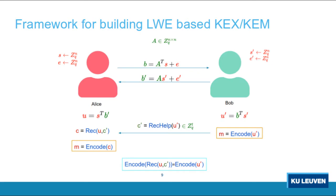Now let's look at the design of our schemes. We used the same framework for all three to build LWR-based key encapsulation mechanisms. The only differences are how the sample B is built, how the public matrix is sampled, and, in the case of module/ring variants, how the secret and error are sampled. As you can see, this is a generic construction of a KEM, and in the case of lattices we need to use encoding functions — error-correction codes — to recover the same message between both parties.